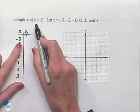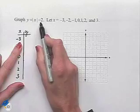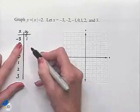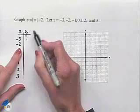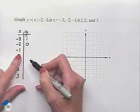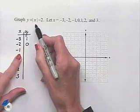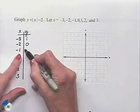We'll have the absolute value of negative 3, which is positive 3, minus 2, and that gives us our y value of 1. The absolute value of negative 2 is 2, 2 minus 2 is 0. The absolute value of negative 1 is 1, 1 minus 2 is negative 1.